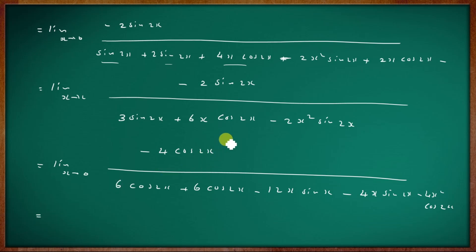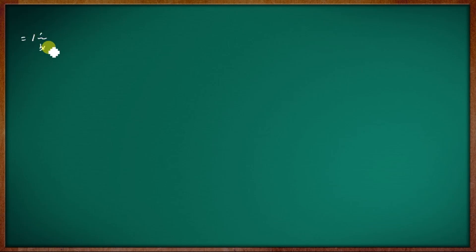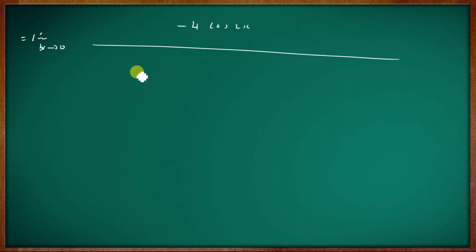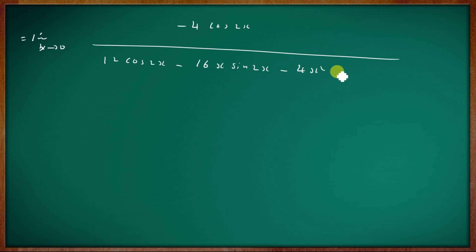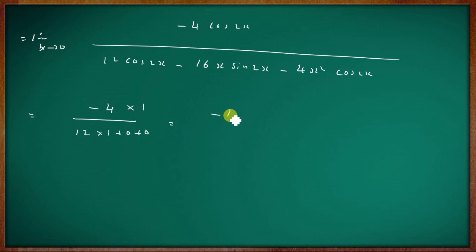Applying the limit x tends to 0: cos 0 is 1. The terms with x go to 0. So we get minus 4 times 1 divided by 6 times 1, which gives minus 4 by 6, equal to minus 1 by 3. The limiting value is minus 1 by 3. Section C is complete.